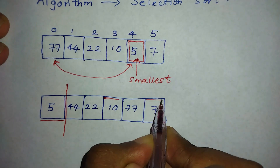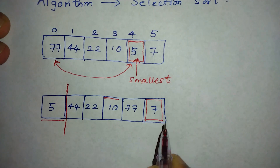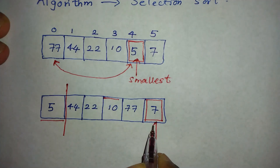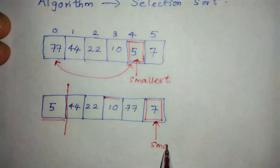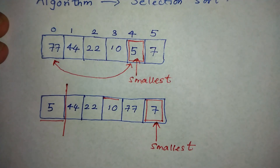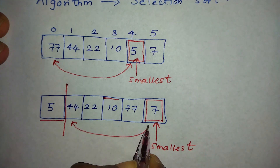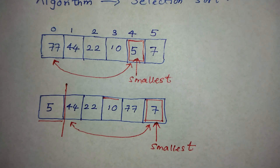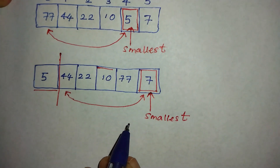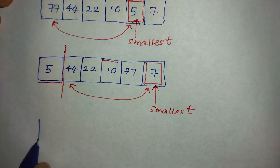Now the second smallest element is number 7. Each time we have to select the smallest element in the right side of the array, so we select number 7. Seven comes to the beginning of the array and 44 will go to the seventh position.